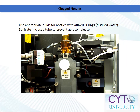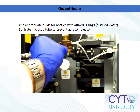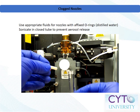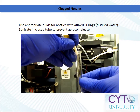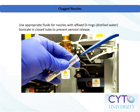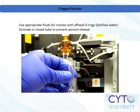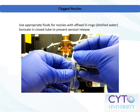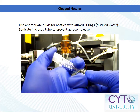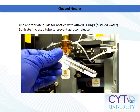In addition to clogs in the sample injection port, cell sorters may also become clogged at the droplet nozzle. For either a stream-in-air or flow cell-based sorter, the easiest way to dissolve a nozzle clog is through sonication. Before you begin, be sure to use appropriate standard operating procedure for the containment of aerosols prior to accessing the nozzle or sort chamber of a clogged instrument. Remove the nozzle from the flow cell and place it into an appropriate vessel for its size.